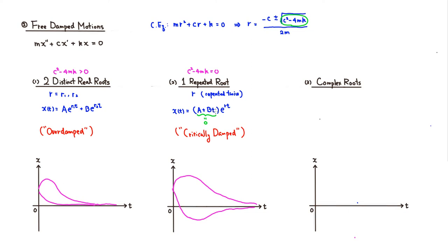And the last case is when c squared minus 4mk happens to be negative. Then you see that you're going to get the complex root. So r is going to be a plus or minus b i.